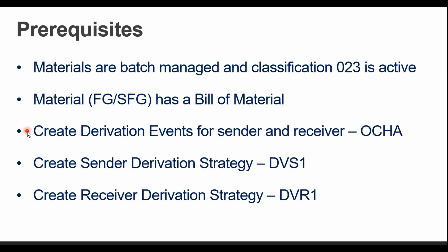The third criterion is to create derivation events for the sender and the receiver materials. The sender is the material which sends its characteristics into the receiver material or receiver batch. The receiver is always the material we are actually trying to manufacture in the process order. In this example, the sender is an API or raw material, and the receiver is a finished product or semi-finished product.